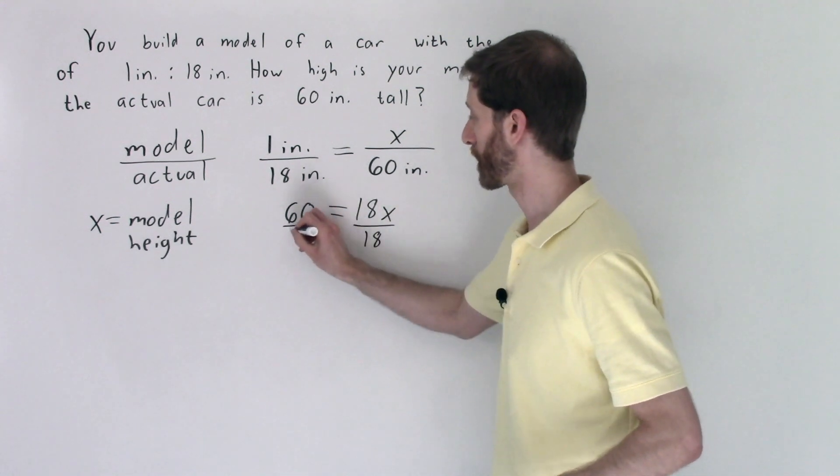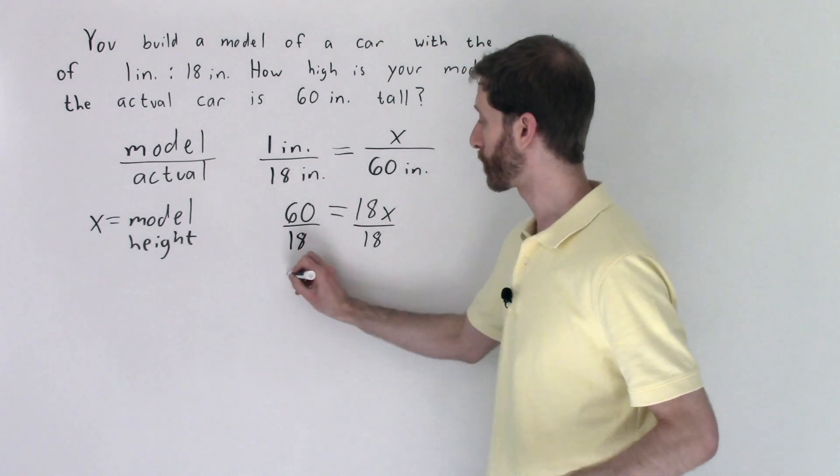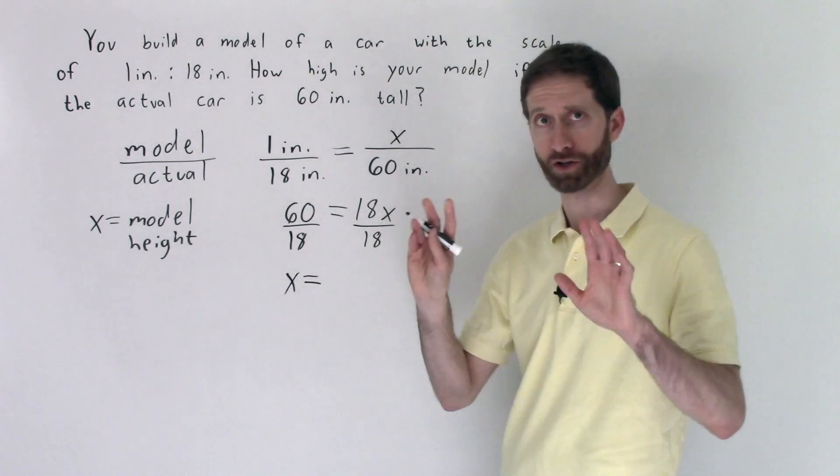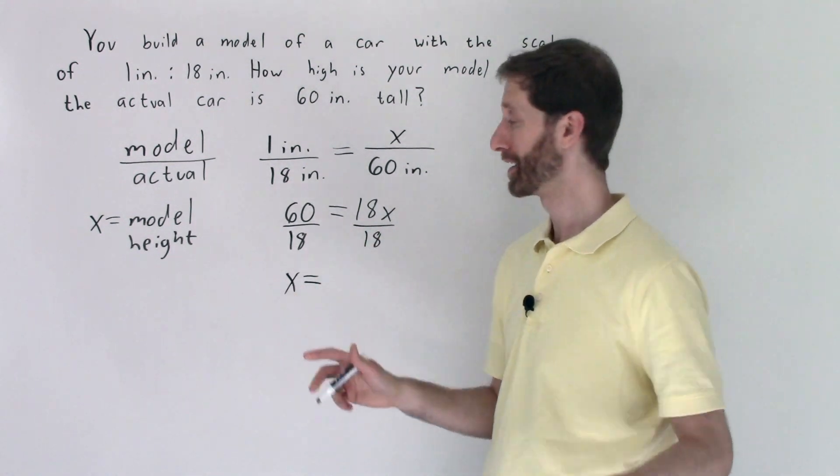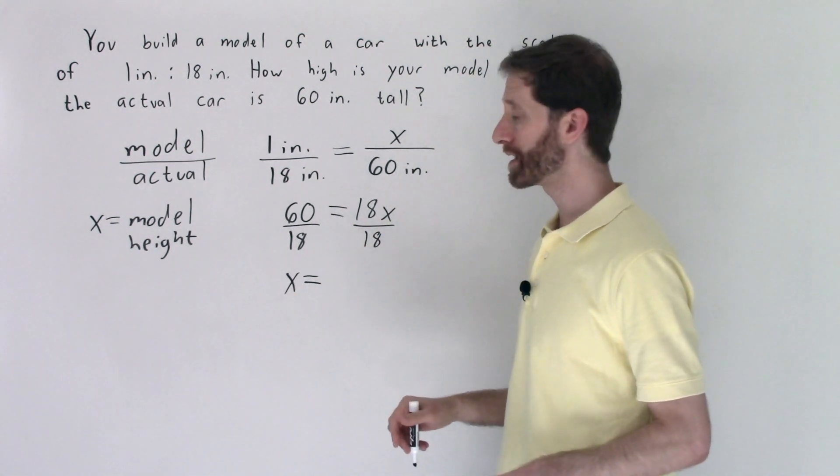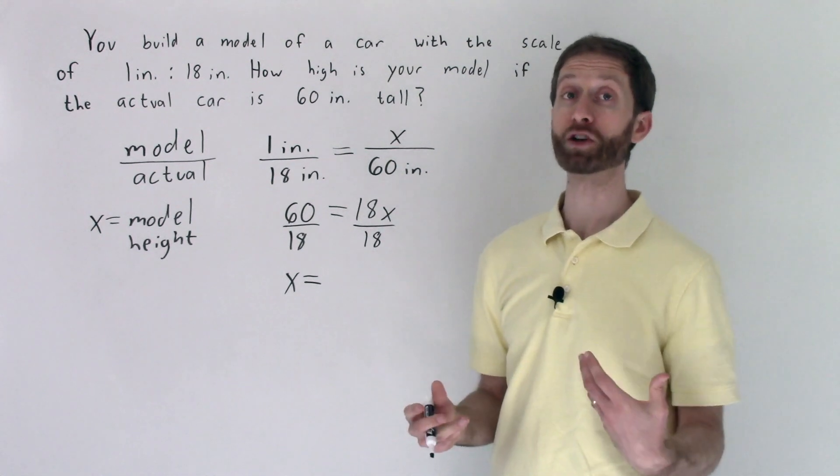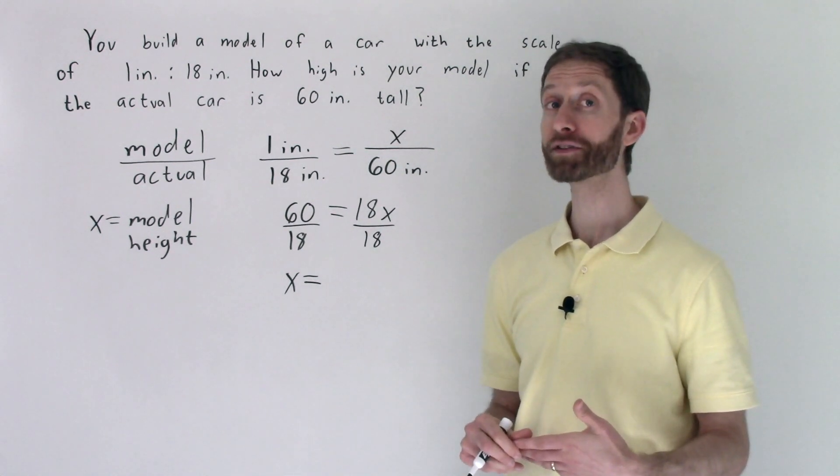And now we're left with, I'm going to bring my variable to the left, just switching things up a little bit, it's all good. 60 divided by 18, that can be reduced by dividing by the greatest common factor of 6. 6 goes into 60 ten times and into 18 three times.